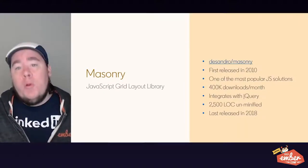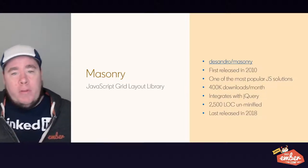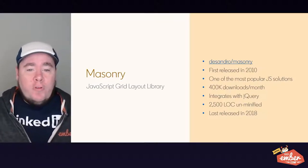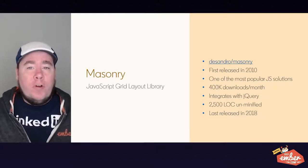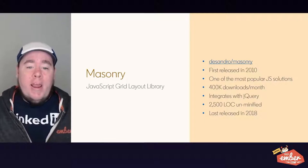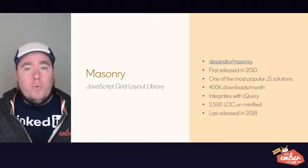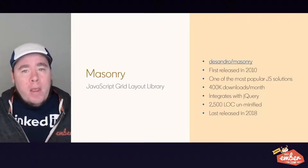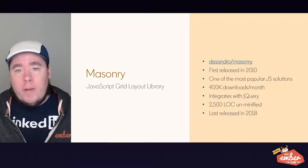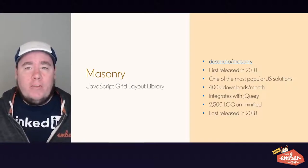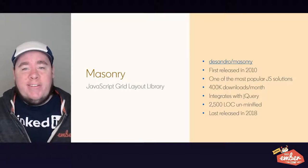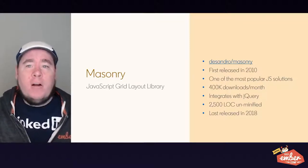Let's think about how we might implement a masonry layout. Many of you may know about the masonry JavaScript library found on GitHub at desandro/masonry. It was first released in 2010, and it's one of the most popular JavaScript solutions for masonry layouts today — it has over 400,000 downloads a month on NPM, and part of its popularity came from a strong integration with jQuery. However, the library itself is 2,500 lines of code unminified, whereas the solution I'm going to show you today takes less than 150 lines of code to implement in Ember. Additionally, the masonry.js library was last released in 2018, so it hasn't received any modern updates.